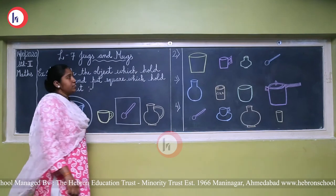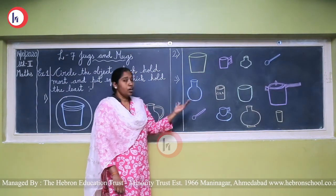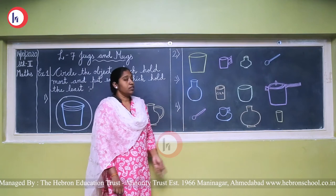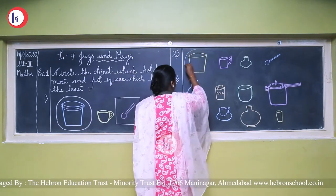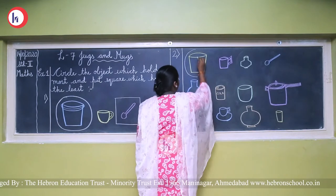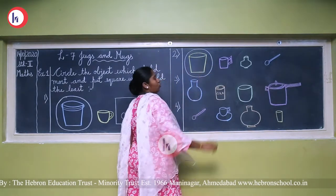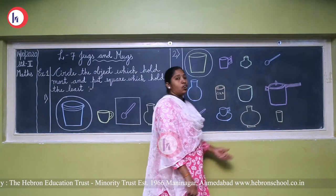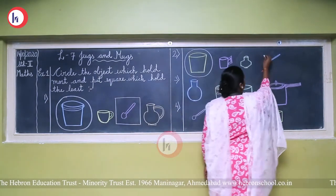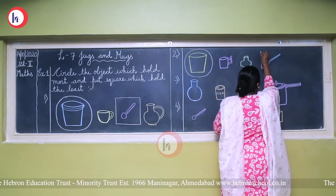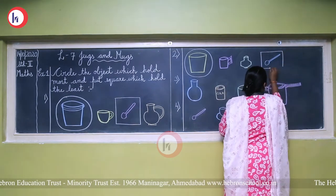Now the second one — again we have four objects. You have to circle the object which holds the most. We can see obviously this object can hold the most, so we are making a circle over it. And the object which holds the least — very less amount — is obviously the spoon, so we have to make a square here, not a circle.